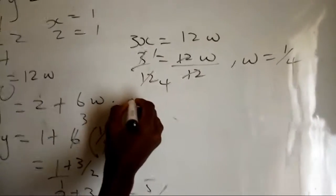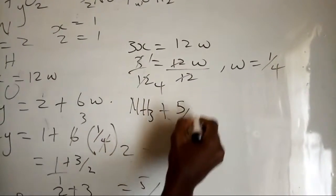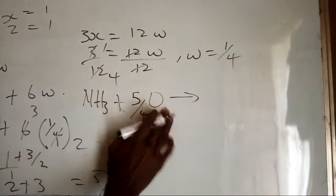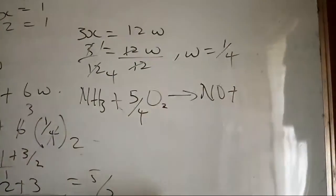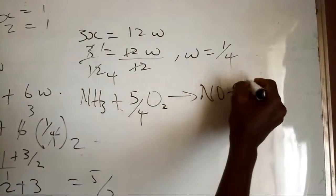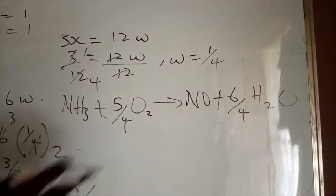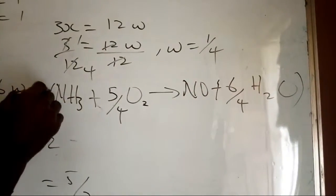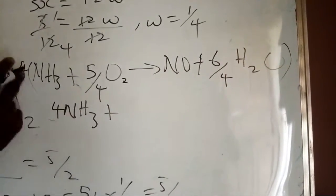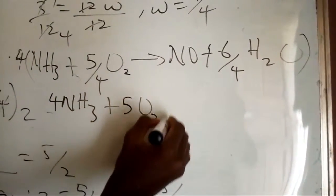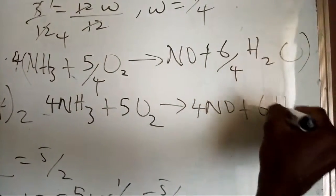Rewriting the equation: NH3 plus 5/4 O2 gives NO plus 6/4 H2O. The LCM of 4 and 4 is four. Multiplying the equation by four: 4 NH3 plus 5 O2 gives 4 NO plus 6 H2O.